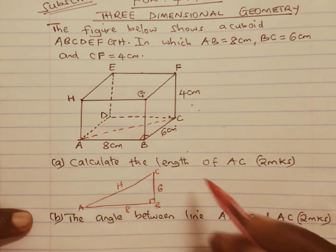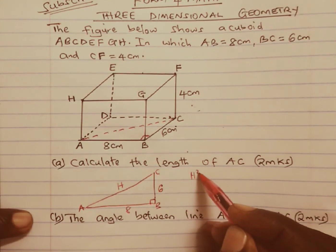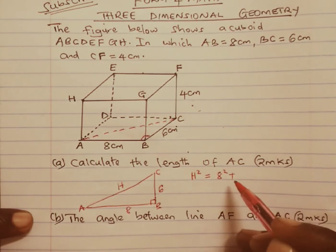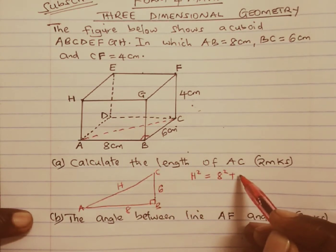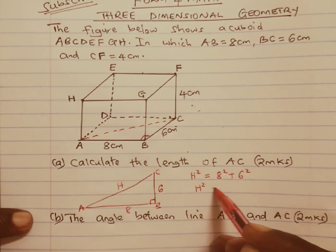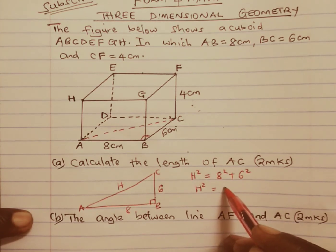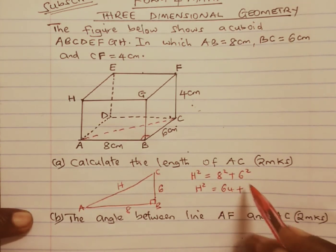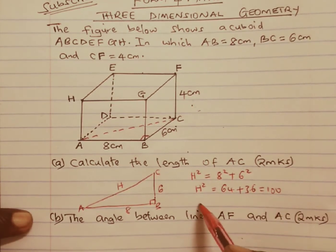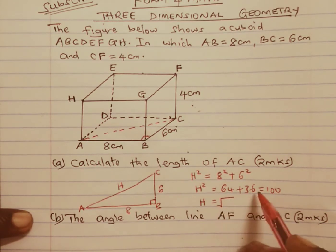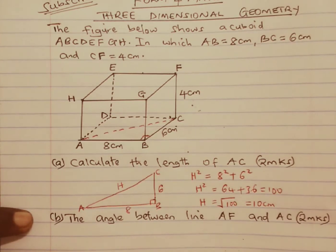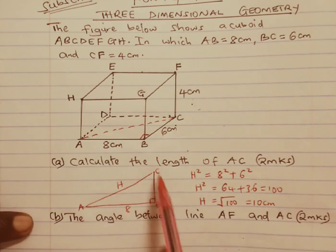To get AC, we know hypotenuse squared equals base squared plus height squared. So H squared equals 8 squared which is 64 plus 6 squared which is 36, giving us 100. Therefore to get H we take the square root of 100 which is 10 cm. So the length AC is 10 cm.